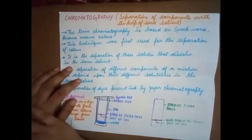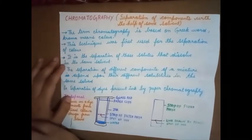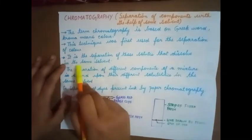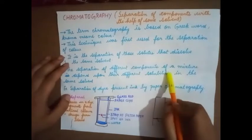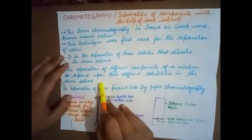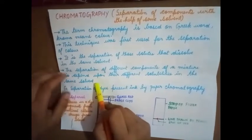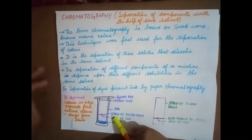The basic principle is we are assuming that these solutes or colors are all soluble in one particular solvent. It is a separation of those solutes that dissolve in the same solvent. The separation of different components of a mixture depend upon the different solubility in the solvent. This point will be clear when I explain this particular experiment.